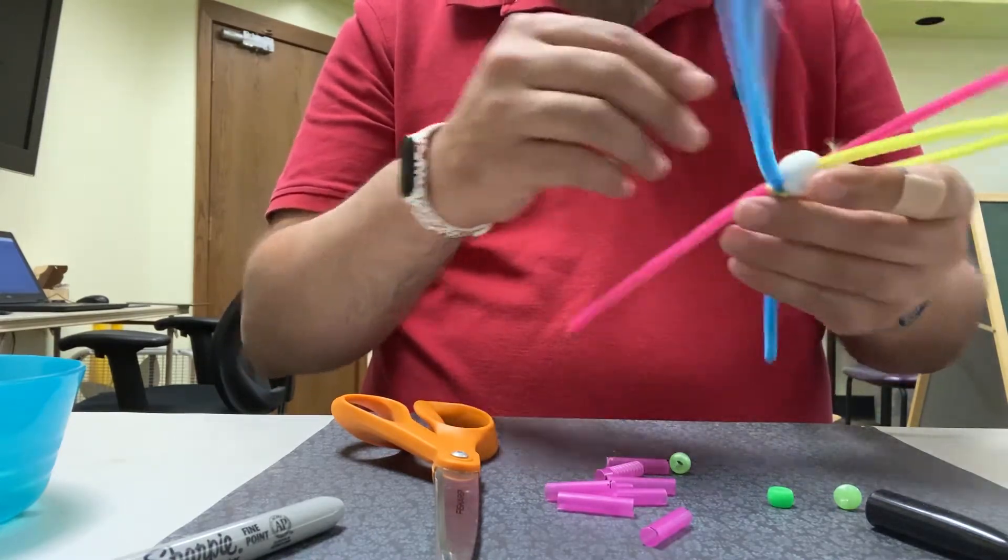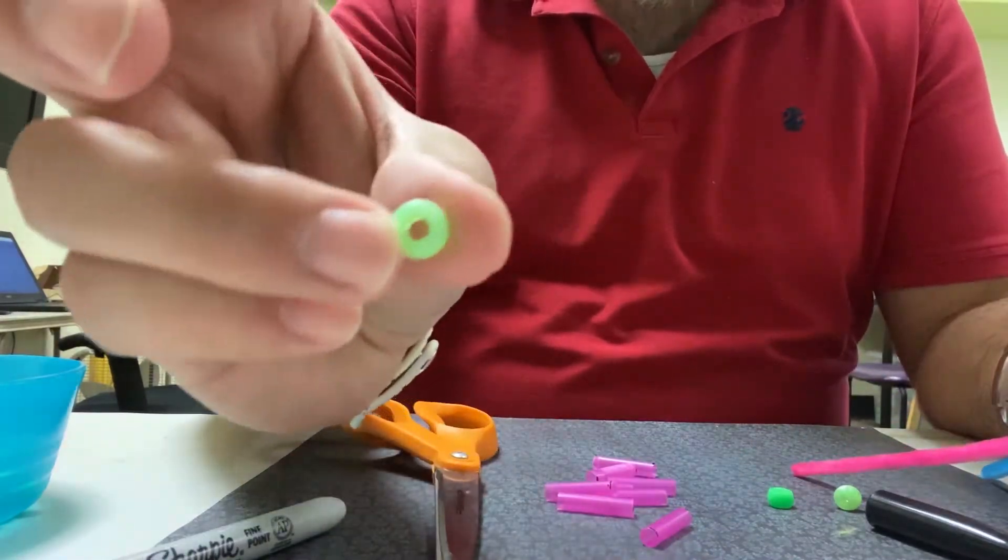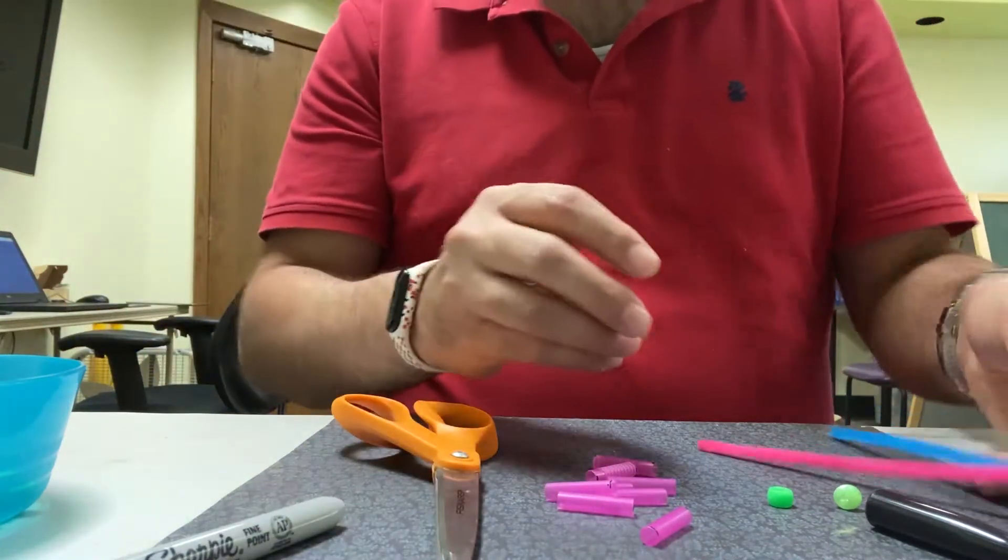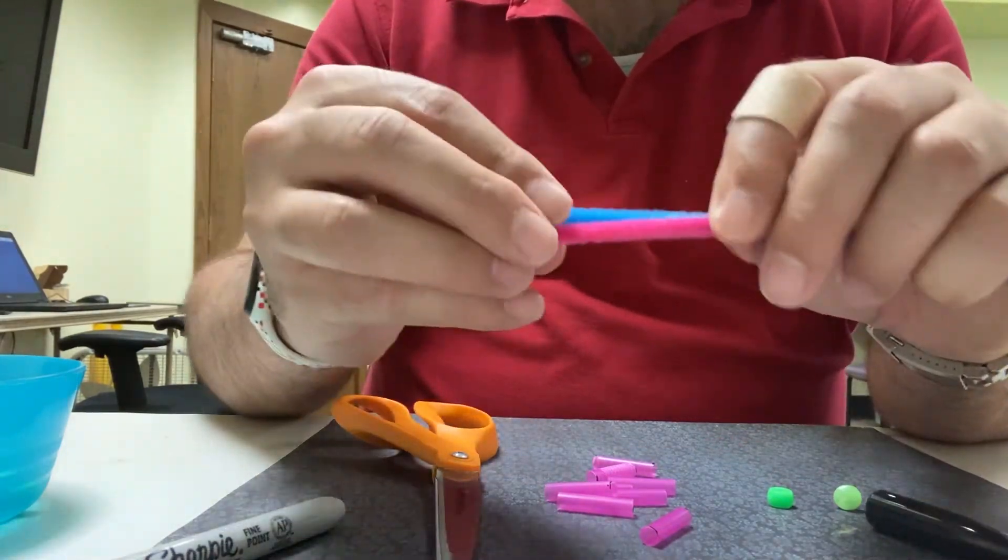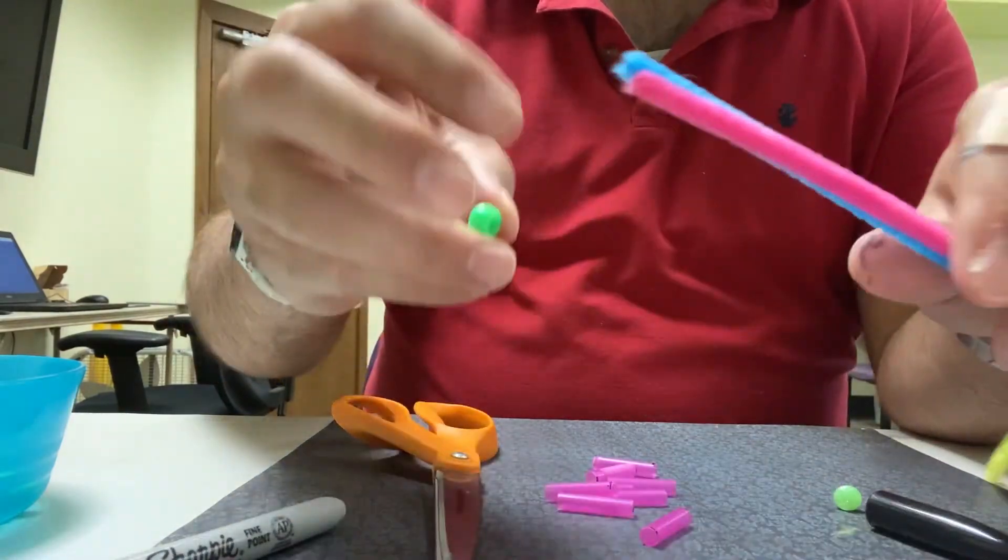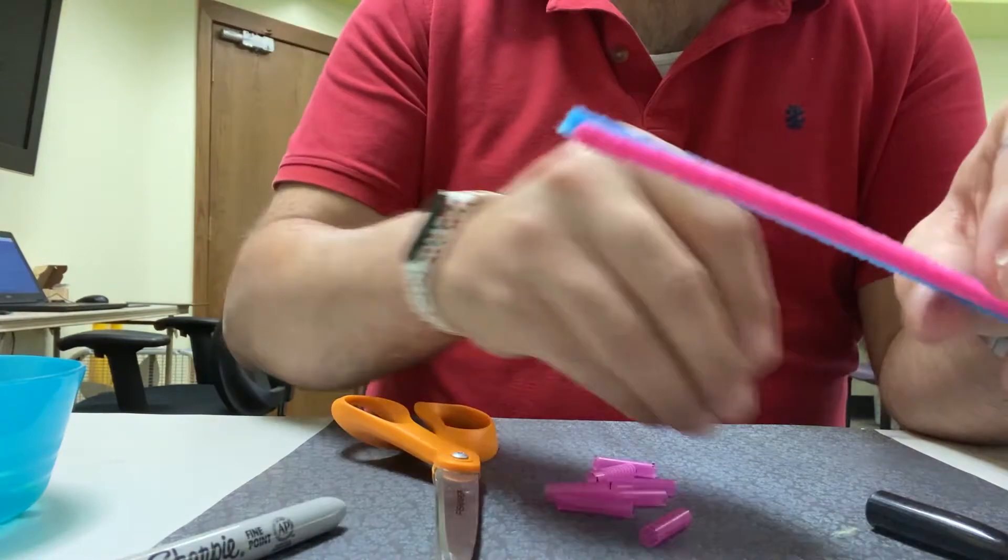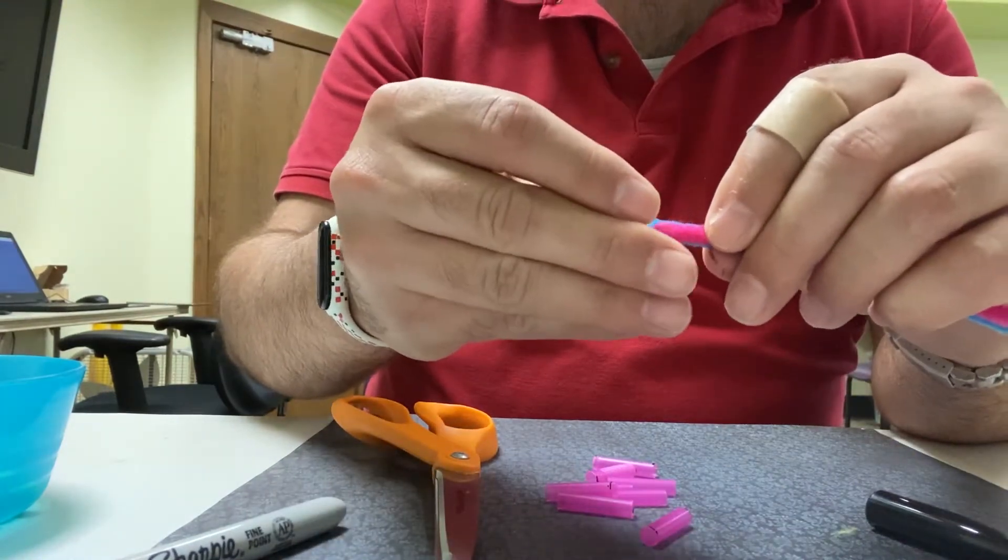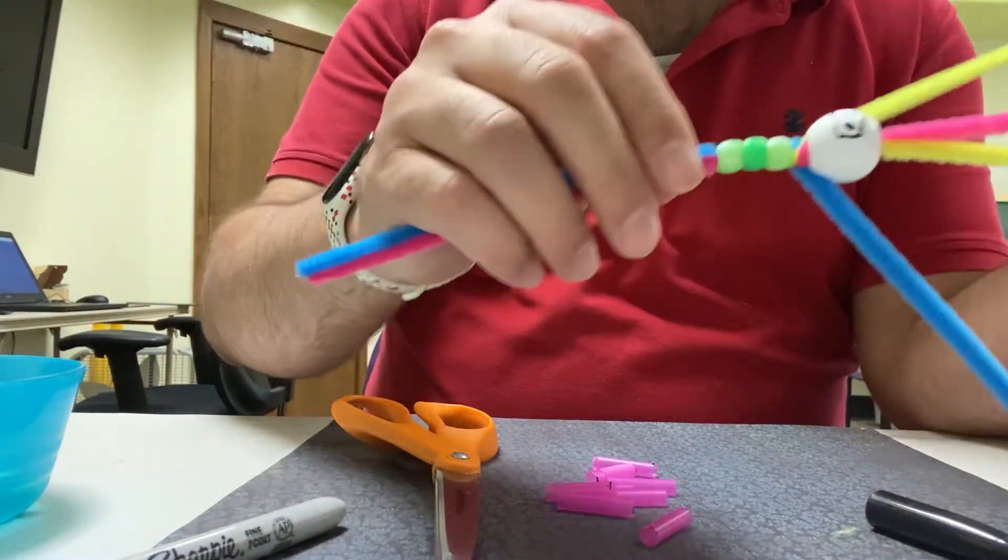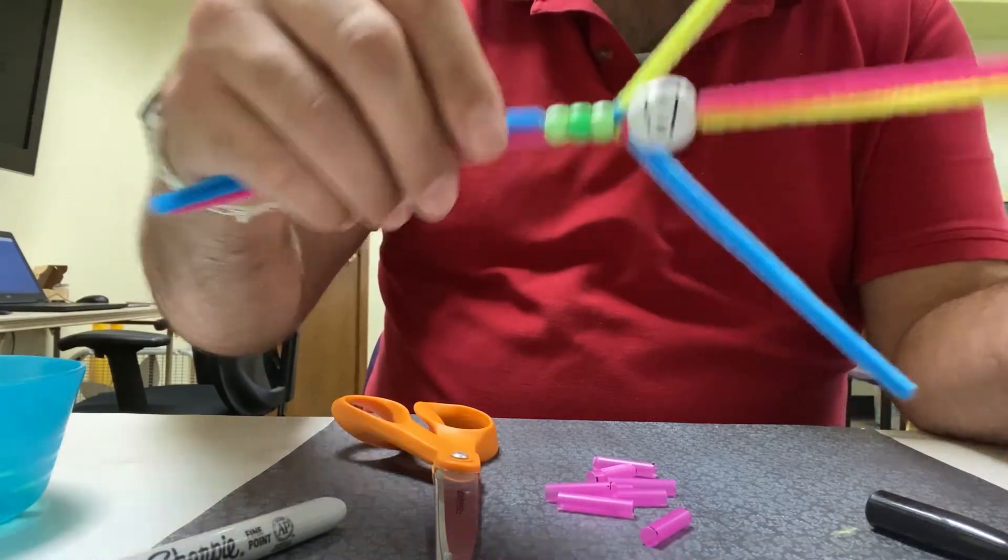Now the next thing we're going to do is take some of our pony beads. These are the smaller beads and we are going to push the legs together and thread three pony beads. You could also use an extra one if you want him to have an extra long body. This is going to be the body of our ninja. So as you can see there's the head, there is the body.